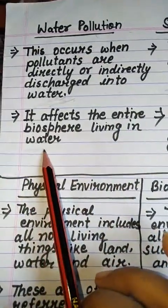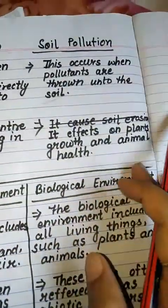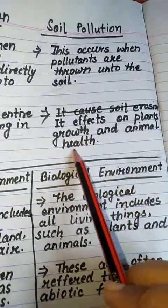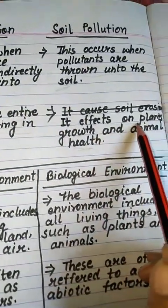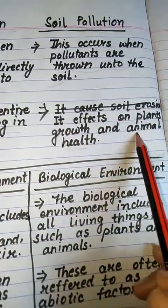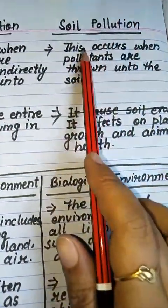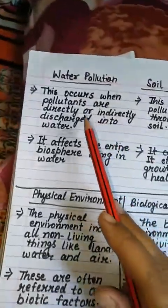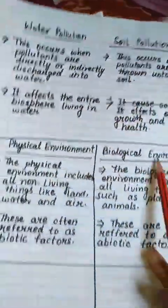Point number two: In water pollution, it affects the entire biosphere living in water. In soil pollution, it affects plant growth and animal health, because a large variety of plants and animals live on soil. So this is the difference between water pollution and soil pollution.